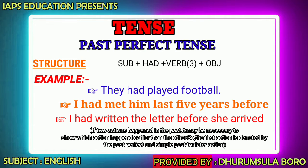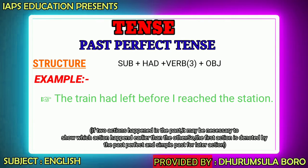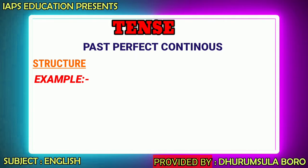The earlier action is expressed with past perfect — 'I had written the letter' — and the later action is expressed with simple past — 'she arrived.' The past perfect tense is mainly used in situations like: 'The train had left before I reached the station.' Here 'the train had left' is the earlier action and 'I reached the station' is the later action.